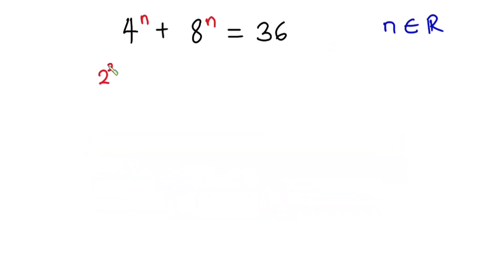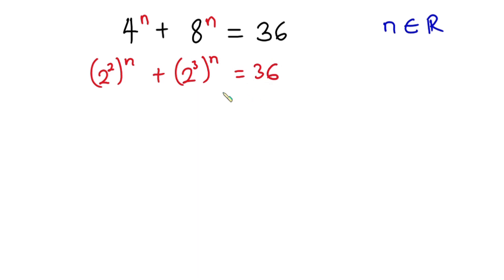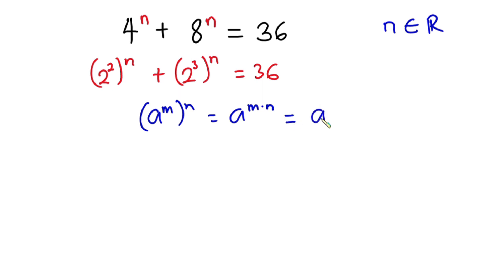4 can be written as 2 to the power 2, so we have 2 squared to the power n. And 8 can also be written as 2 to the third power, so we have 2 cubed to the power n, and this is equal to 36. From indices, a to the power m, to the power n is the same as a to the power m times n, and we can interchange n and the exponent.